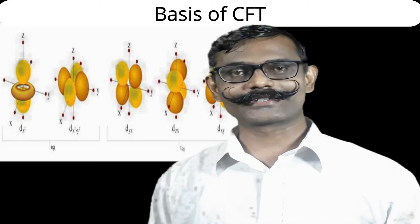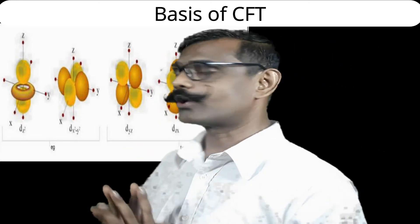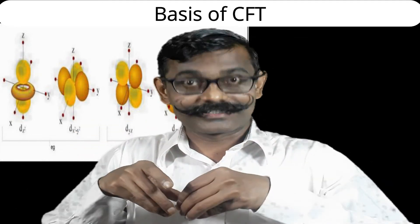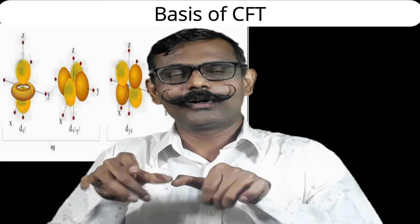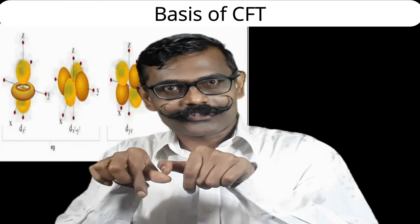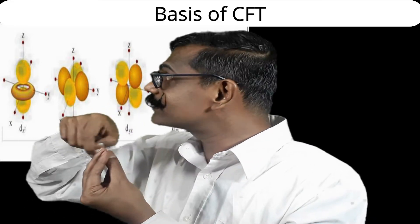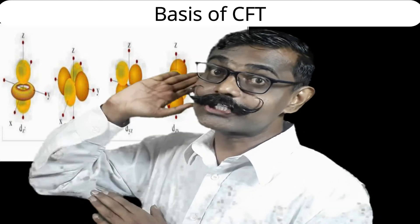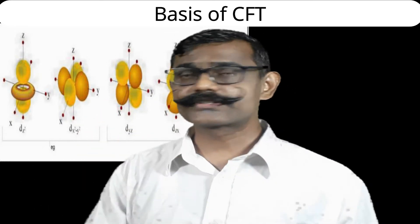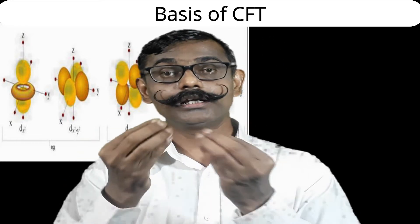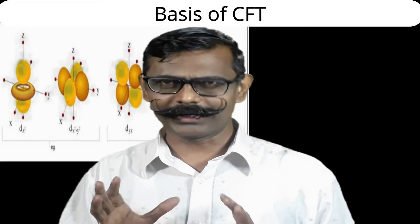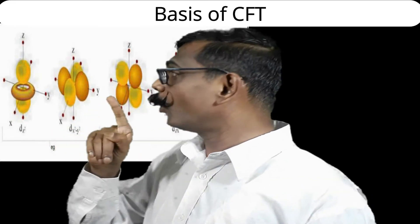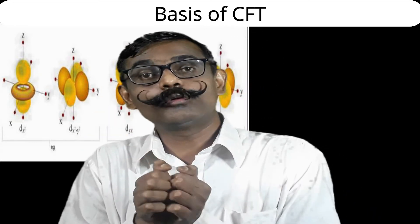The five d-orbitals are represented here. Let us see them one by one. The dz² orbital — the lobe is along the z-axis. And if you observe, like a ring on Saturn, or a donut, or a medu-vada, a ring-like structure remains around the z-axis, along x and y. So it has partial orientation towards x and y, and major orientation is towards the z-axis. The dz² orbital is oriented more towards the z-axis and partly towards x and y.